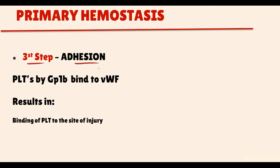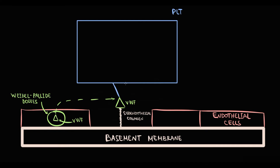The third step is called adhesion. Adhesion is the process by which platelets, via the specific receptor Gp1b, bind to von Willebrand factor, resulting in binding of the platelet to the site of injury. Platelets come to the site of injury and bind through the Gp1b receptor — this simple step is called platelet adhesion.